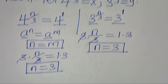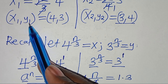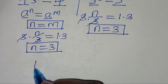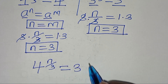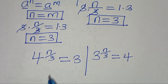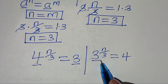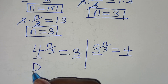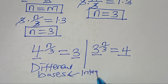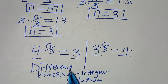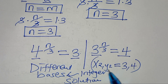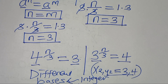Checking the second solution (x₂, y₂) equals (3, 4): we'd need 4 raised to n over 3 equals 3 and 3 raised to n over 3 equals 4. Since the bases are different and not common, we cannot obtain an integer solution from this set. Therefore, (x₂, y₂) equals (3, 4) is rejected.